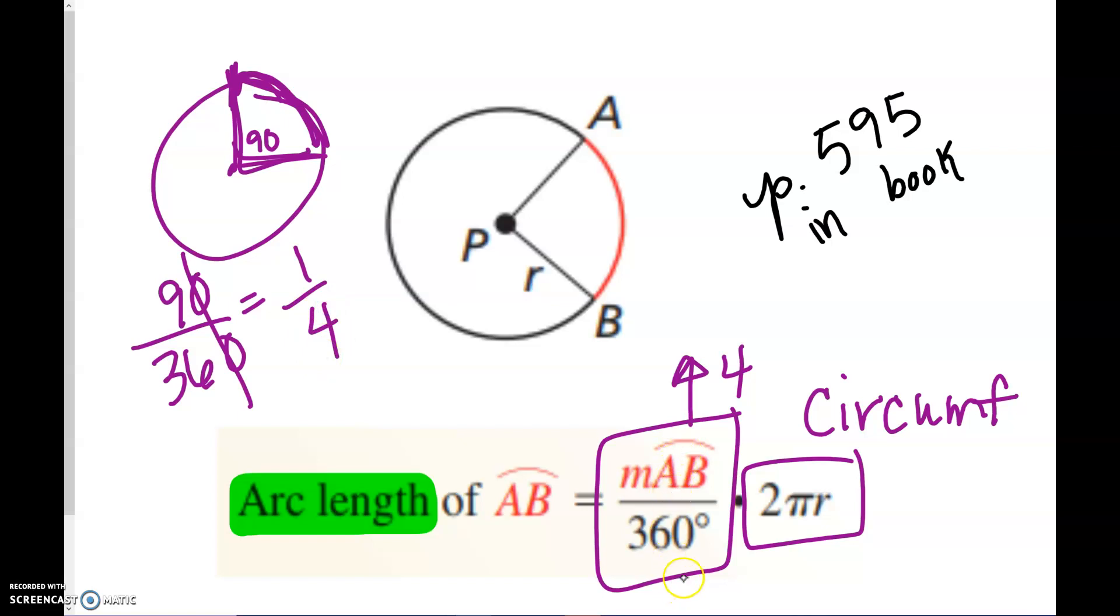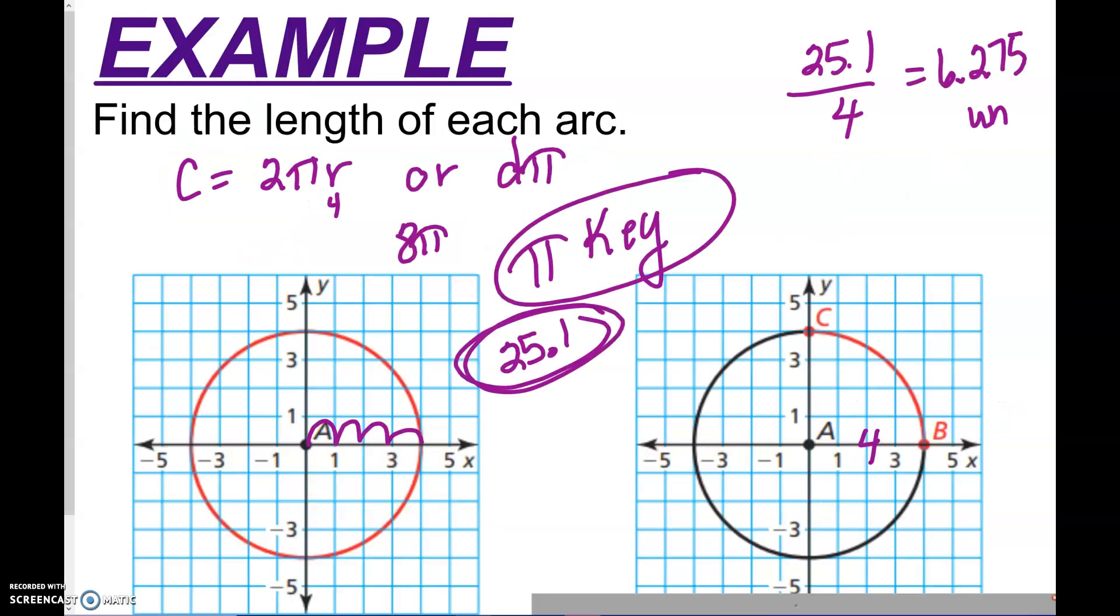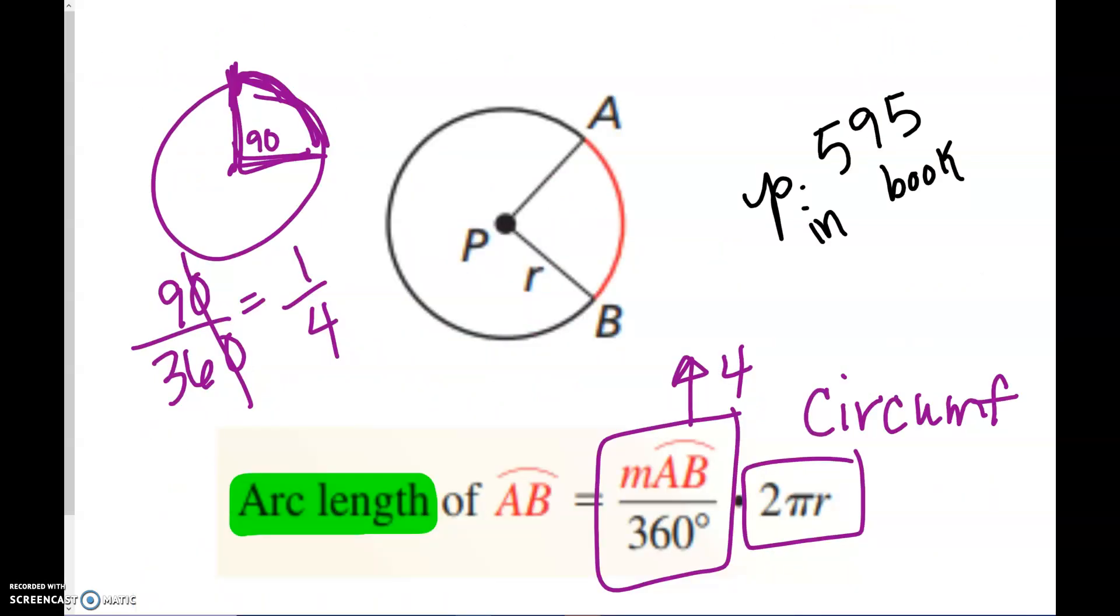Okay, so it was 1 over 4 times your circumference, and that's exactly what we just did on this last problem here. So we took 1 over 4 times the circumference. Okay, so you guys basically just developed this formula. So the measure of that arc over 360 times your circumference.